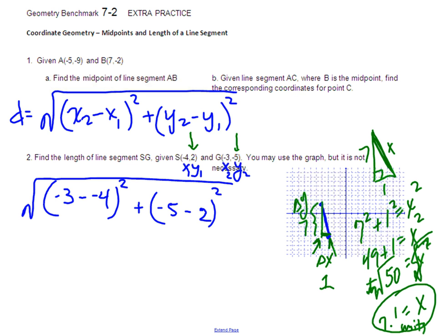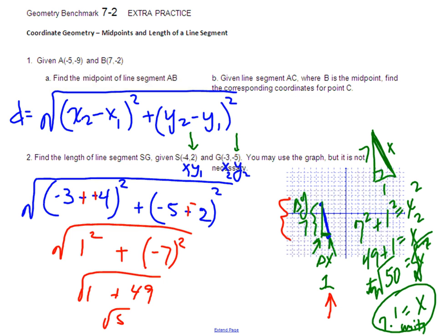Well, negative three minus negative four—if I go plus plus here I'll get one. It's not seven, it's one. They're only one unit away, and we knew that from right here, from our picture. And right here, negative five minus two is negative seven squared. And we knew that distance was seven. So we get the same thing: one squared is one, seven squared is forty-nine. Let's get the square root of fifty again.